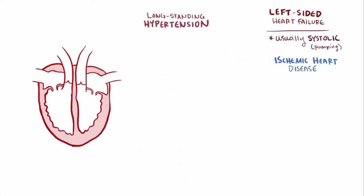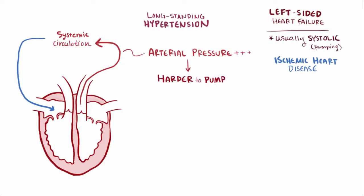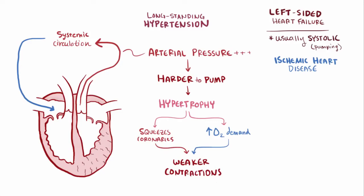Long-standing hypertension is another common cause of heart failure. As arterial pressure increases in the systemic circulation, it gets harder for the left ventricle to pump blood out. To compensate, the left ventricle bulks up and its muscles hypertrophy so that the ventricle can contract with more force. The increase in muscle mass also means greater demand for oxygen, and the coronaries get squeezed down by this extra muscle so that even less blood is delivered to the tissue. More demand and reduced supply means some ventricular muscles start to have weaker contractions, leading to systolic failure.